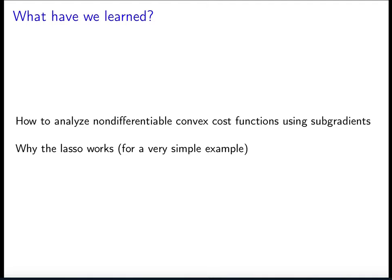Similar techniques are used to analyze sparse regression models in the literature, of course with more complicated models since here we only have two features. What have we learned? We have learned how to analyze non-differentiable convex cost functions using subgradients, and we have hopefully gained intuition about why the lasso works for a very simple example. It comes down to the geometry of the cost function and how it interacts with the least squares part, essentially making the minima of the cost function fall onto the axis so that they are sparse. Thank you very much.